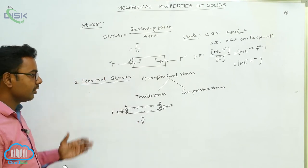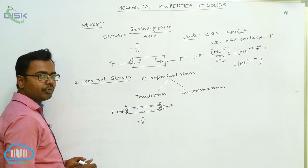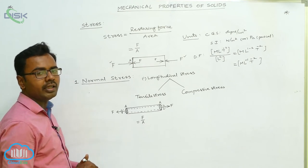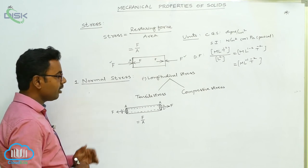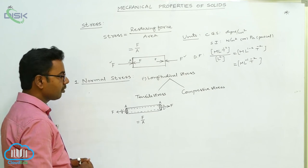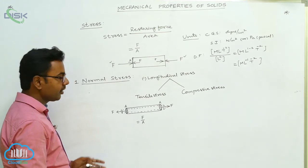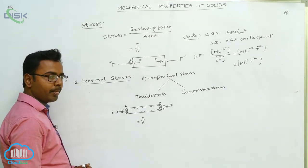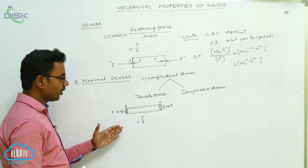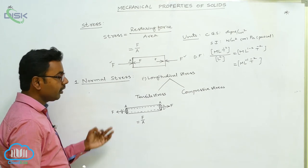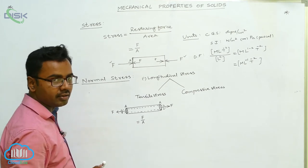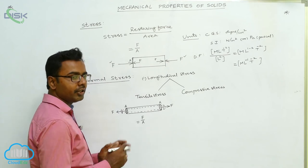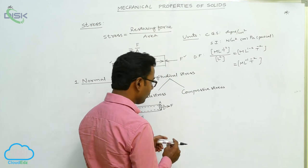Any stress is calculated using the same formula: restoring force by area, or applied force by area. Tensile stress is the stress which produces elongation in the length of the body, as shown when two forces F and F act at the two ends of a rubber cord or wire in opposite directions to stretch it, increasing its length. The stress which produces this elongation is called tensile stress, calculated as applied force F divided by area A.